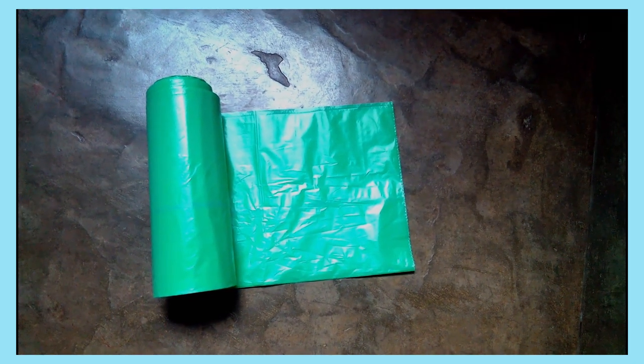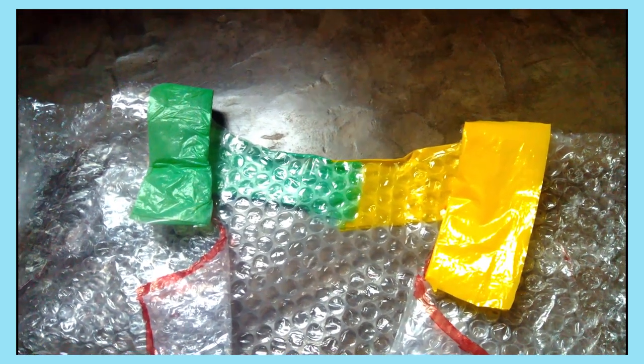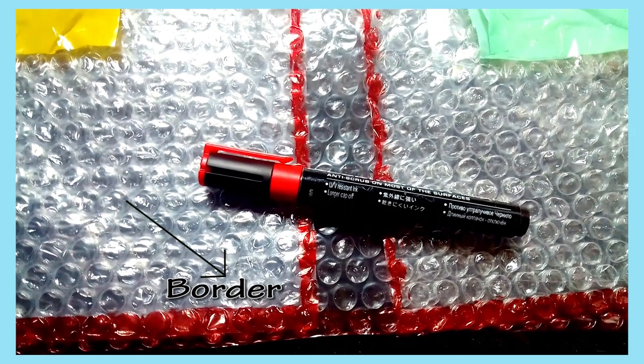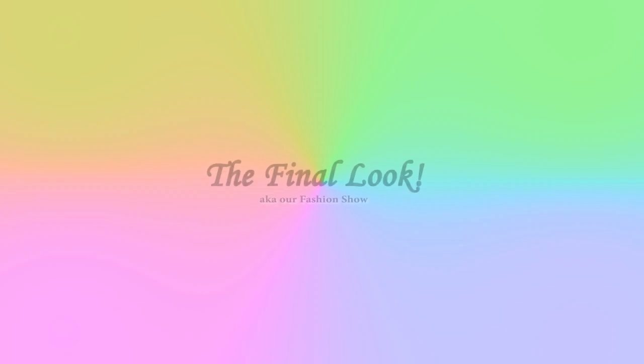To decorate it a little, we're going to take a yellow plastic bag and a green garbage bag to make the collar and the pockets. Then, using a red marker pen, we will outline along the border of our outfit. And we're done!